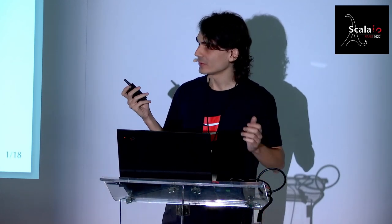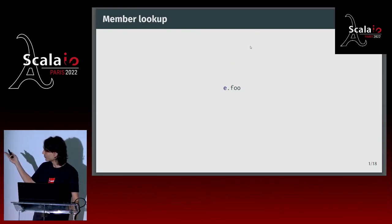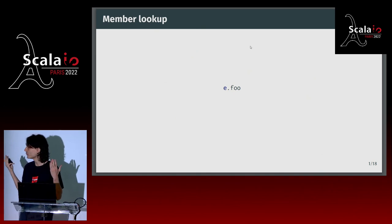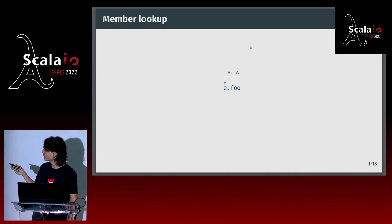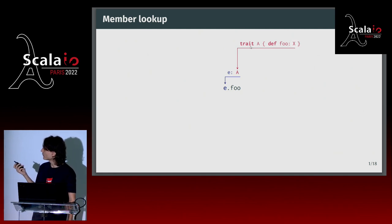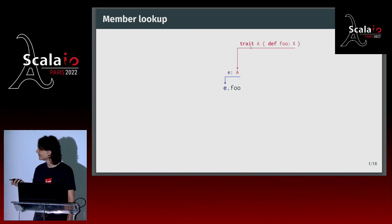I'm going to start very simple with member lookup. You probably recognize this kind of code — there's a prefix e, and I'm calling some member foo on it, and I'd like to know the type of e.foo. The first thing I'm going to do is look at the type of e itself. Imagine e has type A, and A is a trait with a method foo that returns X. So in that case, the type of e.foo is X. Easy.